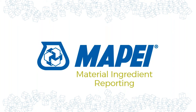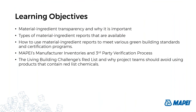Before we get started, I'll preface this by stating that I do not work in MAPE labs, I'm not in R&D, and I am not a chemist. Most conversations around hazards, chemicals, and raw materials are over my head. However, I know just enough to apply them to green building programs and will share that knowledge today. Today's learning objectives include material ingredient transparency and why it's important, types of material ingredient reports available, how to use them to meet green building standards, our manufacturer inventories, the third-party verification process, and the Living Building Challenge Red List.